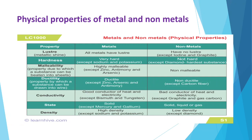Then conductivity. Metals are good conductors of heat and electricity. That is why we make wires of metals and we make cooking vessels of metals. On the other hand, non-metals do not show this property.